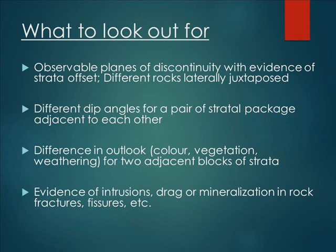Thirdly, the outlook of the rock. Focus on the color, the vegetation or type of vegetation. Also, the amount and type of weathering on both adjacent rocks — it could be a pointer to some faulting across the boundary. And then lastly, evidence of intrusions, drag, or mineralization are very key. So you want to look out for these elements.